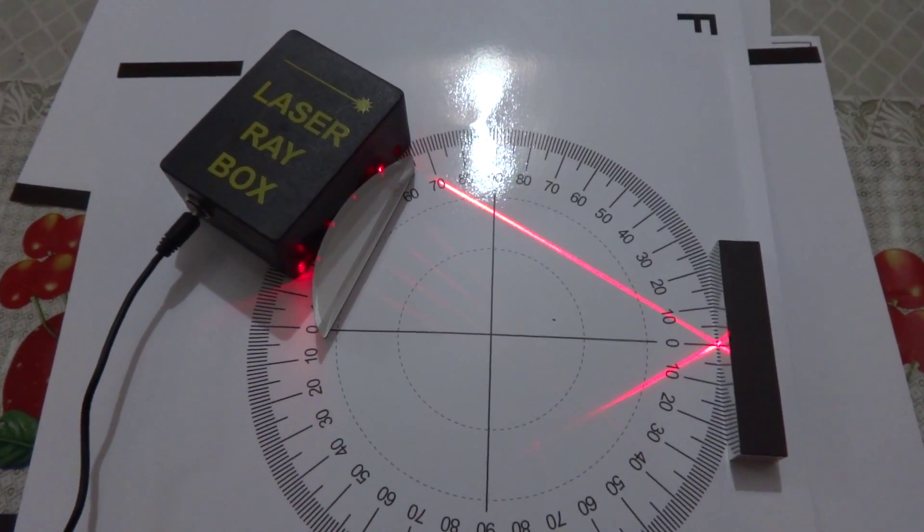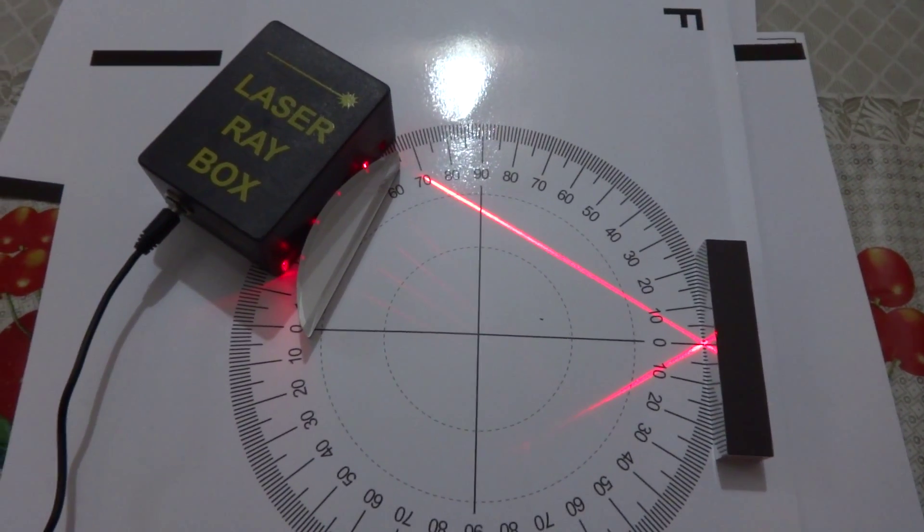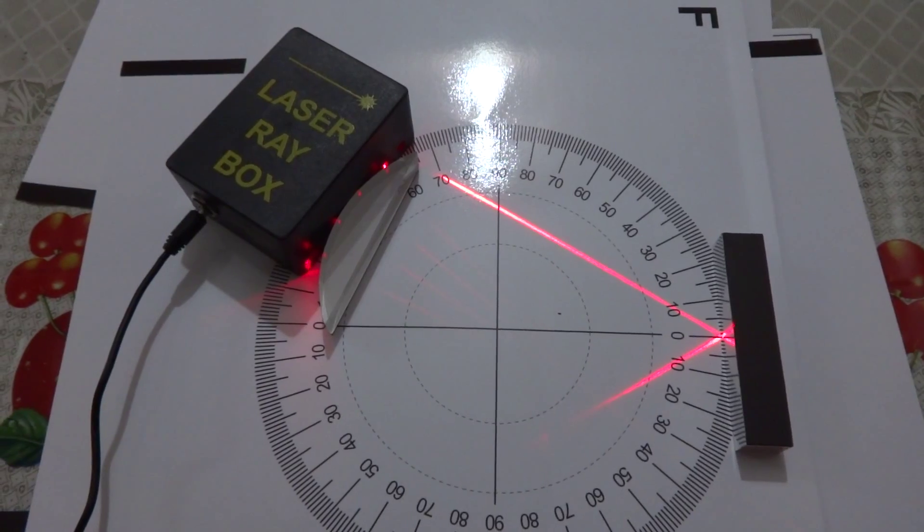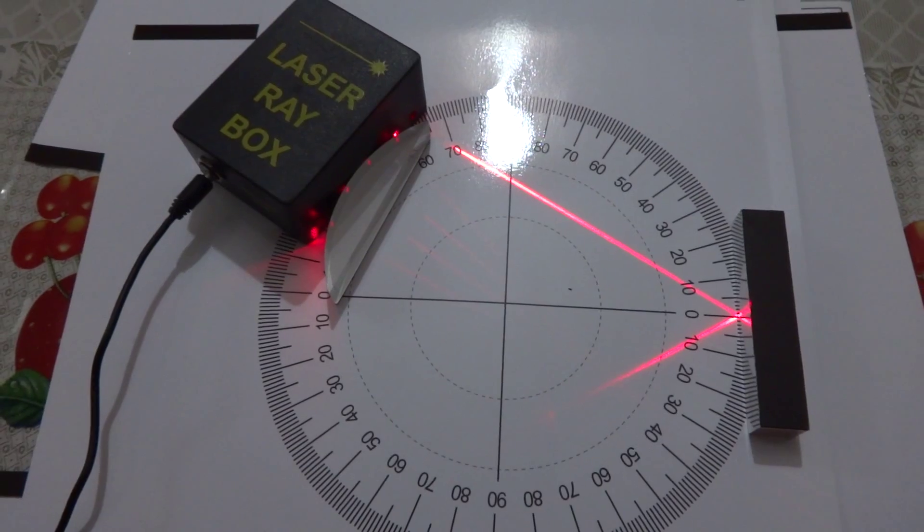In spherical mirrors, there are two categories. One is convex mirror, the other one is concave mirror. In the very first setup of demonstration, I have kept here the plane mirror.